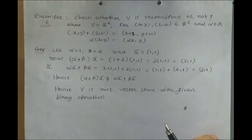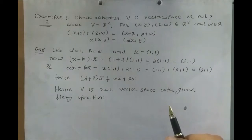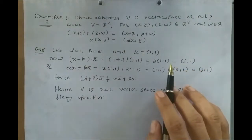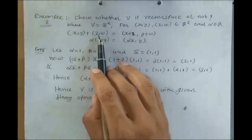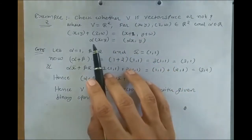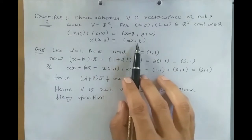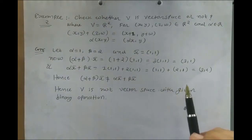The second example: check whether V is a vector space or not. Here V is R² space. For two vectors (x, y) and (z, w) belonging to R², and alpha belonging to R, the binary operations are defined as: (x, y) + (z, w) = (x+z, y+w), and alpha · (x, y) = (alpha·x, y).